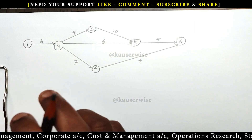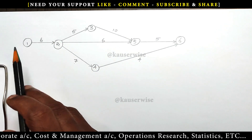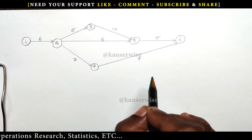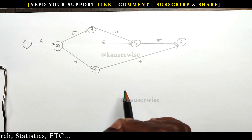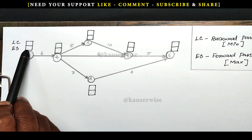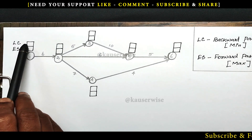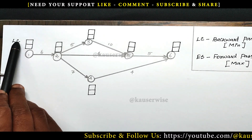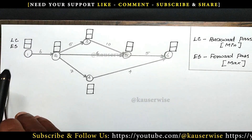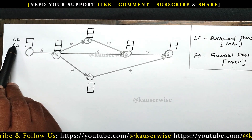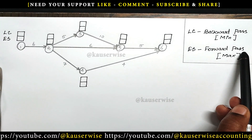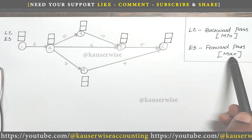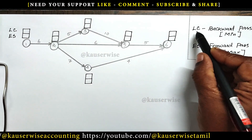Now the next step is we need to calculate earliest start and latest completion time for each and every node. This information is required in order to find out the total float. Here we have two squares — the lower square represents earliest start and the upper square represents latest completion time. We need to calculate earliest start time and latest completion time for each and every node. For earliest start, we need to do a forward pass. When we have more than one option, we have to select the maximum duration. First let us calculate earliest start time, then we will see latest completion time.